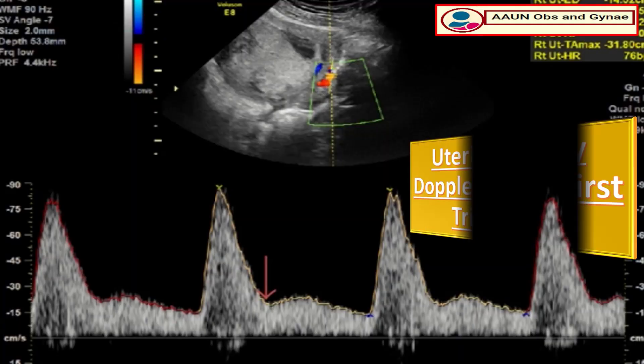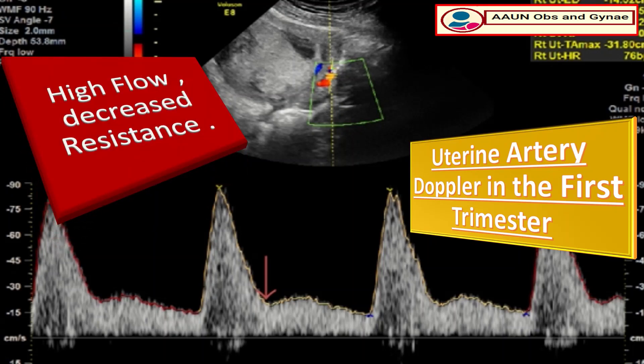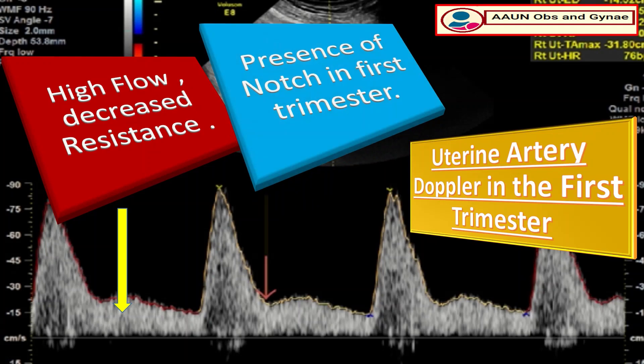In the first trimester, uterine artery Doppler demonstrates high flow and decreased resistance as the completion of trophoblastic invasion occurs. The presence of a notch in the first trimester is normal and reflects the high vascular resistance at that stage.